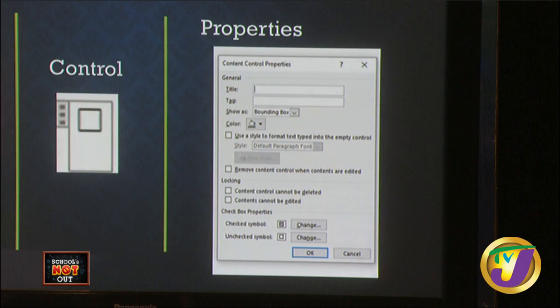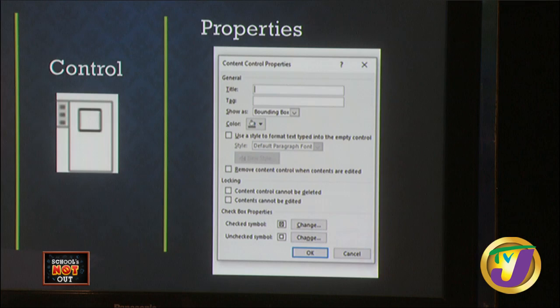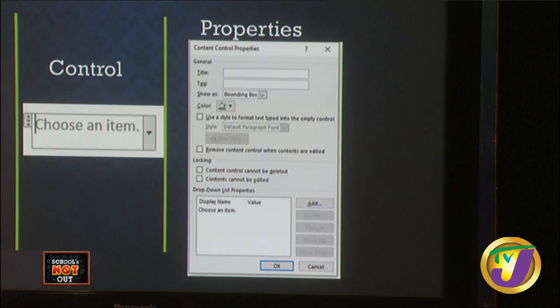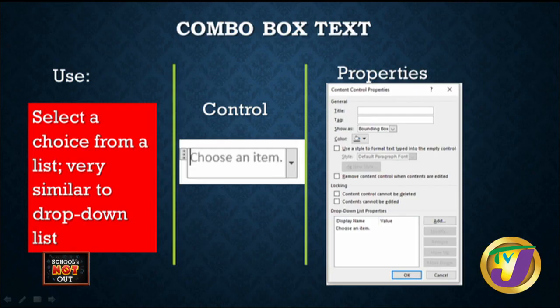The Checkbox can be placed with simple lists where users make a selection with a tick or X beside an item. In the properties, you can change the symbol used for checking — you can choose your own symbol. Some prefer a tick; the default is an X, but it's your form so you can make that change. The Combo Box has the same kind of setting as a Drop-Down List — you're able to select from a set of items by clicking the arrow to the right.